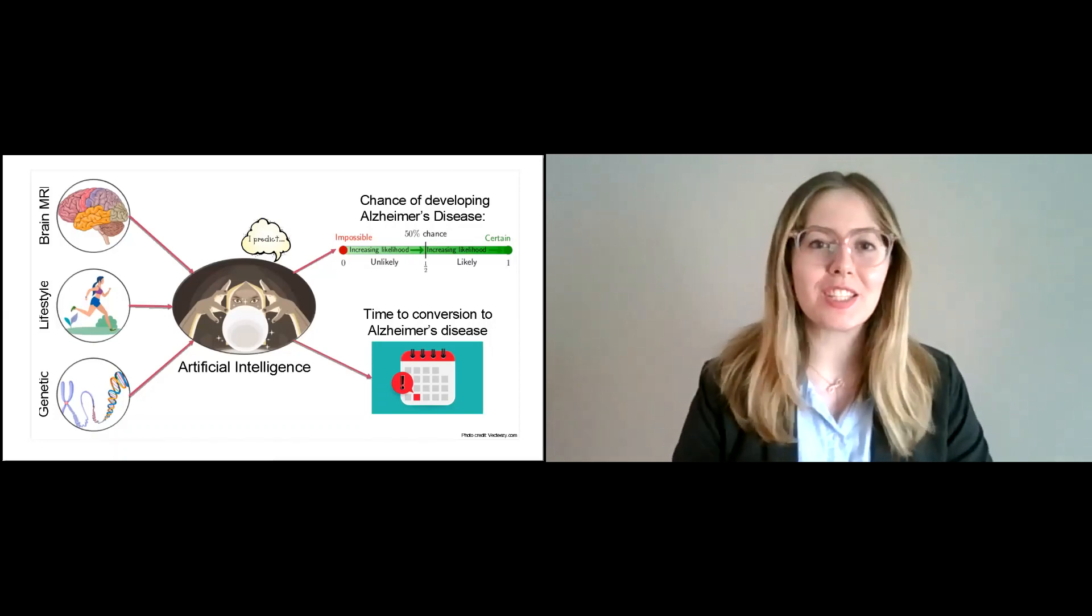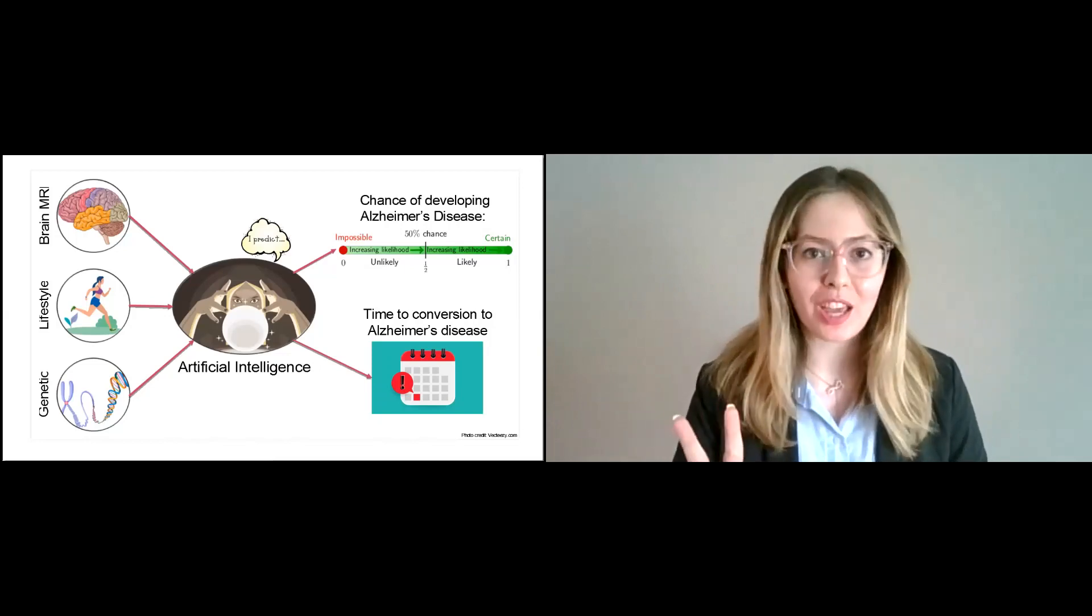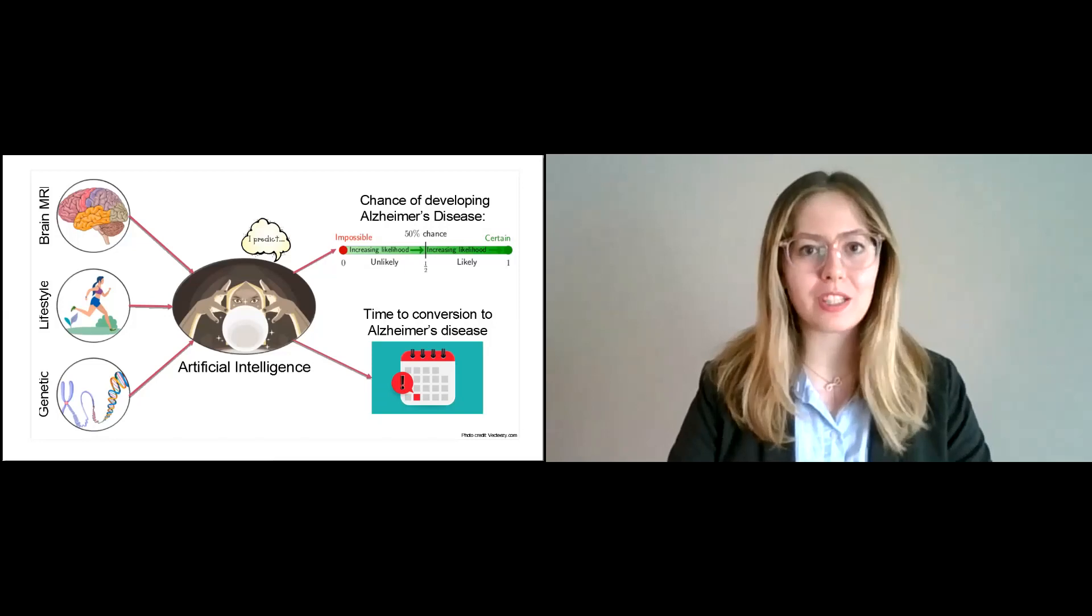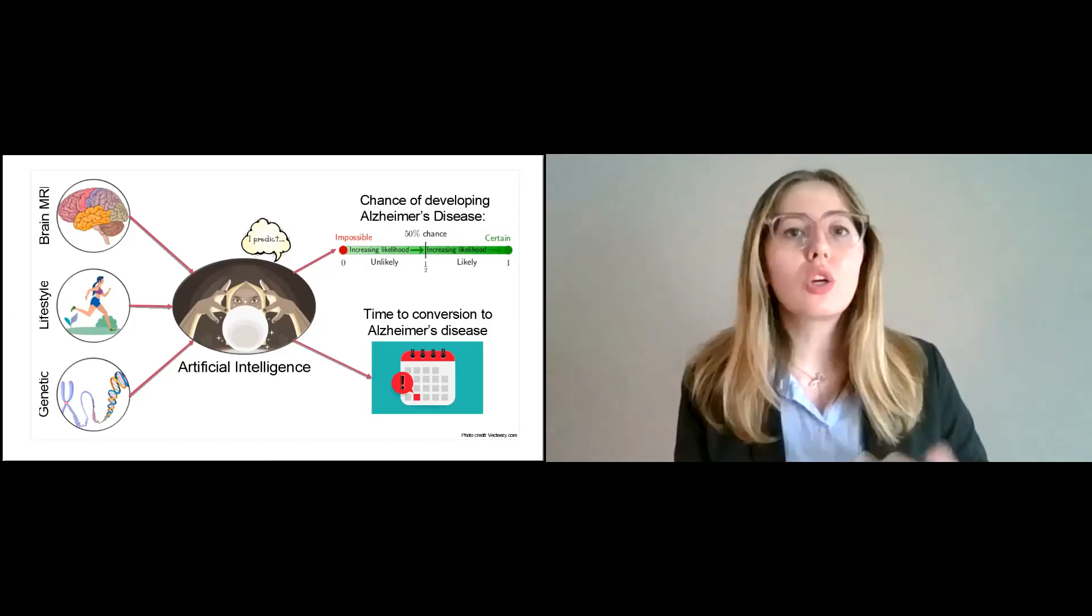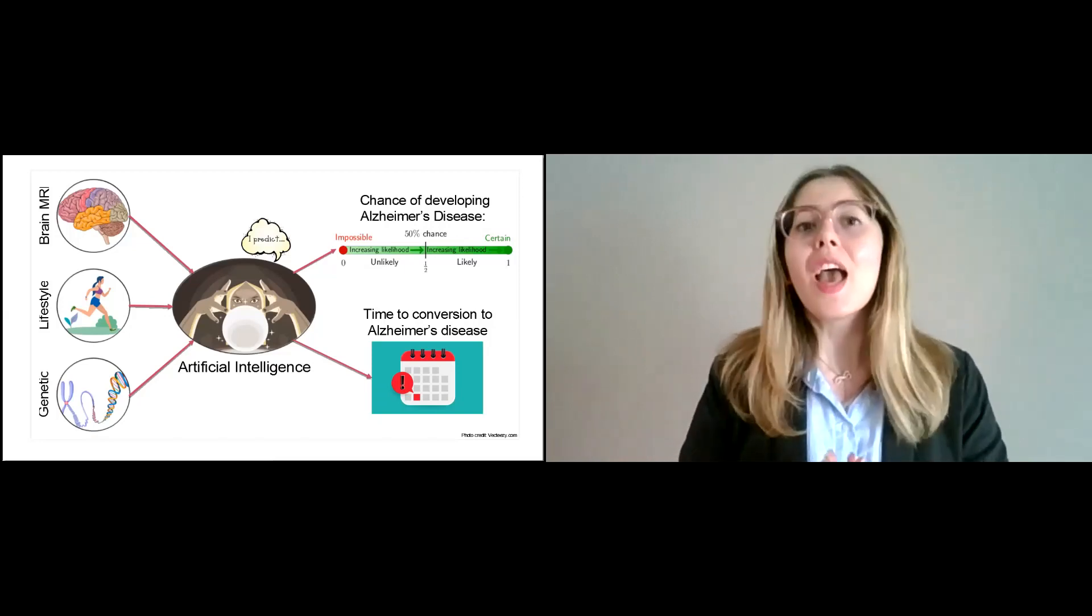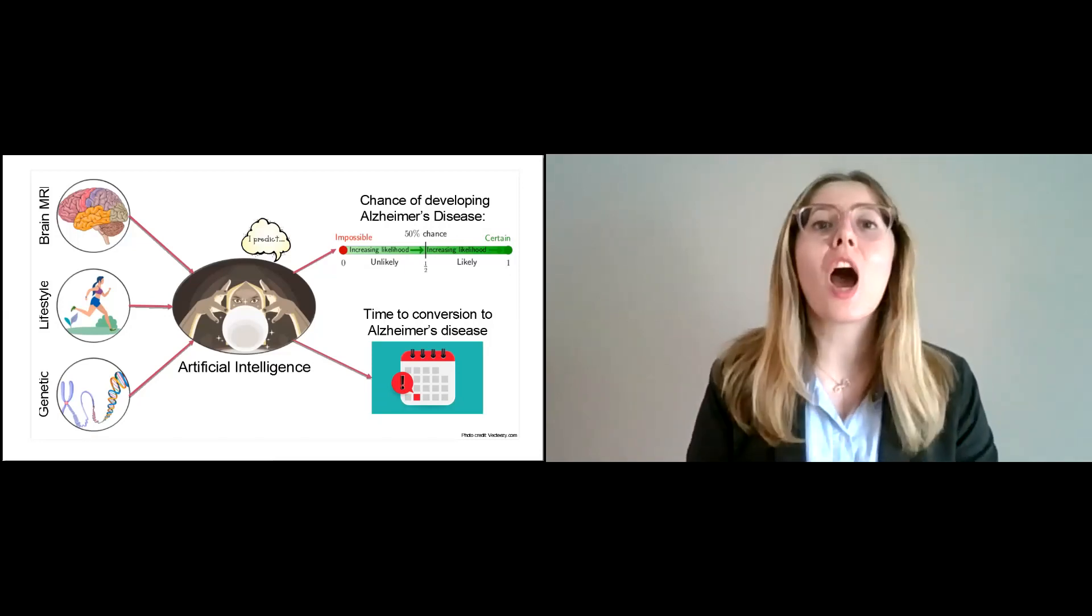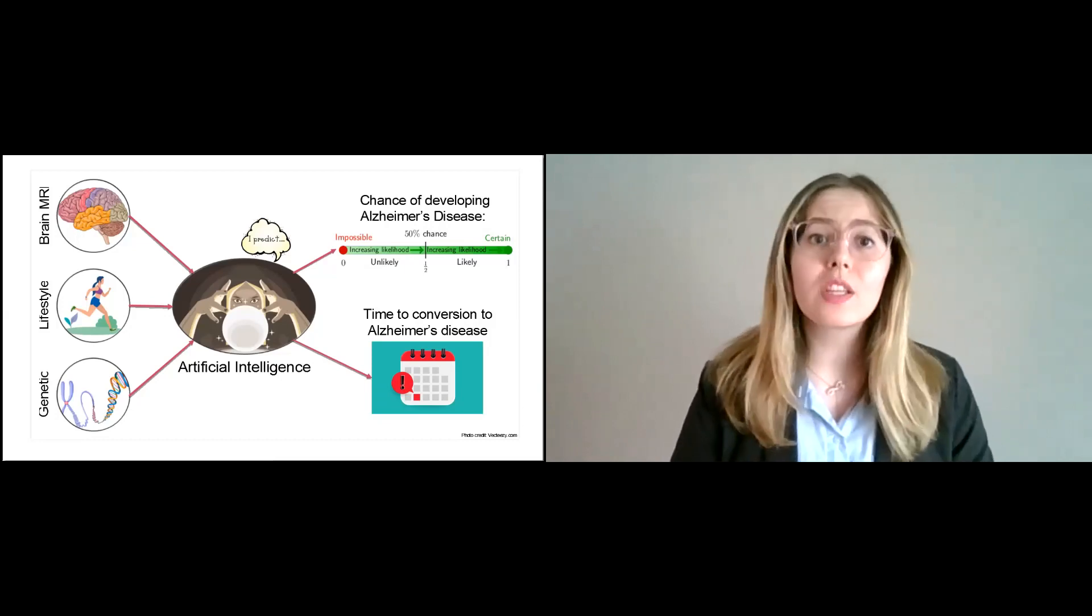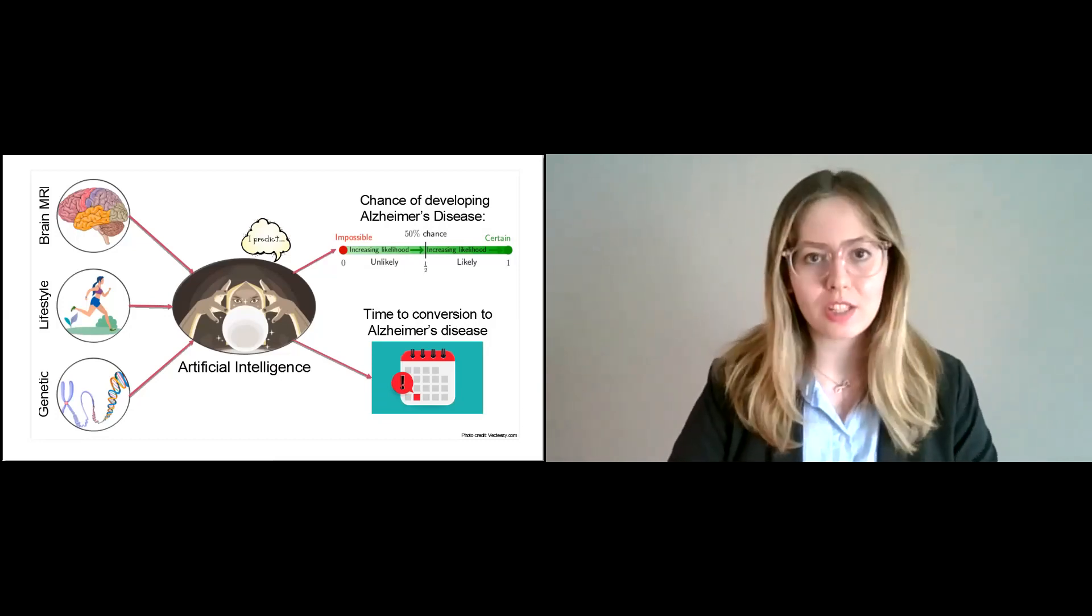After my machine is done learning all of this information, I use it to predict two things. The first thing is the chance of developing Alzheimer's disease in the future. My machine gives me this number between 0 and 1 that shows the likelihood of developing Alzheimer's disease in the future. If this number is closer to 1, it means that my subject is highly likely to develop Alzheimer's disease in the future, while if this number is closer to 0, it means that my subject is not at risk.